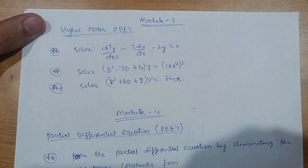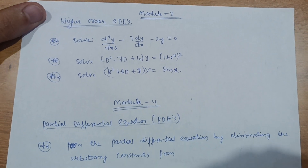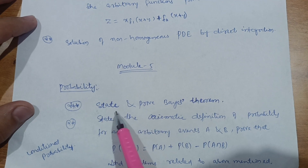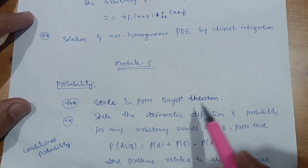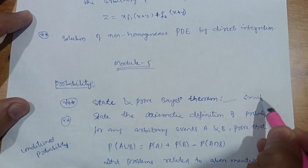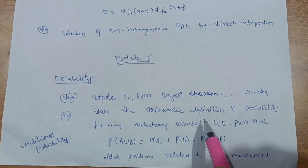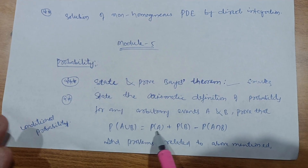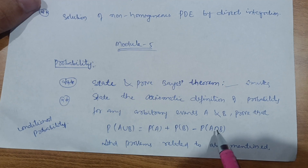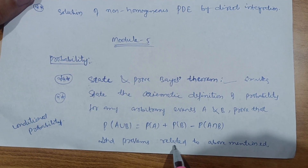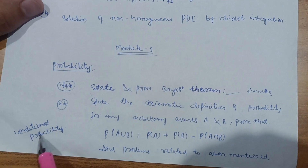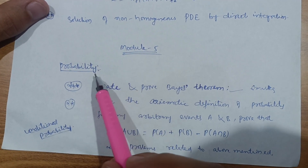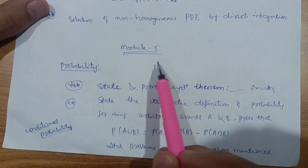The next passing module is Module 5 — Probability, which you may already be familiar with. A definite question is: state and prove Bayes' theorem (worth about 6 marks). Also, state the axiomatic definition of probability and prove that P(A ∪ B) = P(A) + P(B) − P(A ∩ B). Go through probability problems and the definition of conditional probability — this module will help you pass.